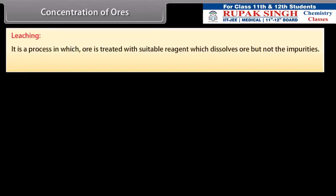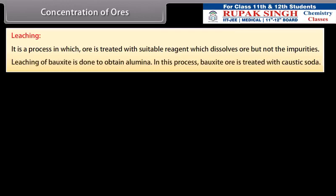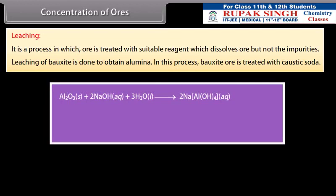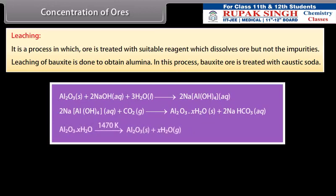Leaching. It is a process in which ore is treated with suitable reagent which dissolves the ore but not the impurities. Leaching of bauxite is done to obtain alumina. In this process, bauxite ore is treated with caustic soda. Al2O3 dissolves in concentrated solution leaving behind impurities. The illuminate in solution is neutralized by passing CO2 gas and hydrated Al2O3 is precipitated. The precipitate of Al2O3 is filtered, dried and finally heated to about 1470 Kelvin to obtain pure Al2O3.